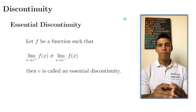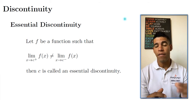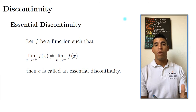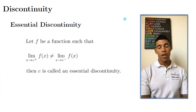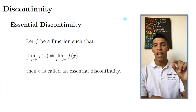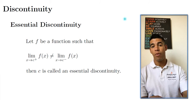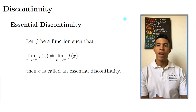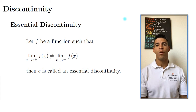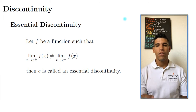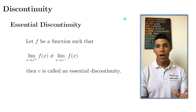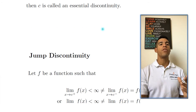Basically, when the limits are different, that's when we have an essential discontinuity. In the previous video we talked about removable discontinuity, where the limits were equal but the function was not equal to the limit at the point. This discontinuity is when we have different limits from the left and from the right — in other words, the limit does not exist. When the limit does not exist, we call it essential discontinuity. The first part of the essential discontinuity is called the jump discontinuity.